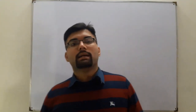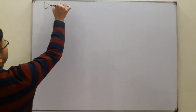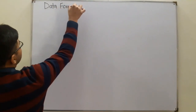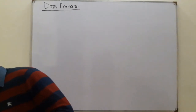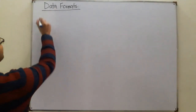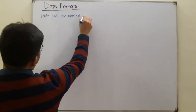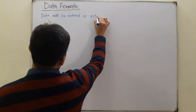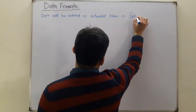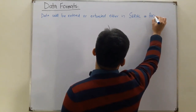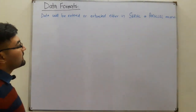Bismillahirrahmanirrahim, Assalamu Alaikum. Fadhar Khan here. Today we see the classic data formats of the register — the different ways how we can enter data into a register and how we can take the data out of the register. There are two basic methods: data could be entered or extracted either in serial or in parallel manner.